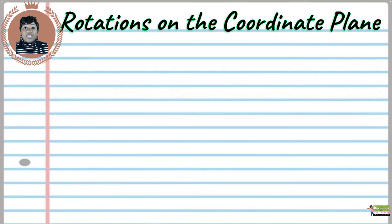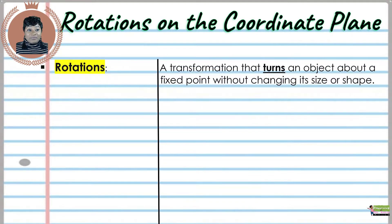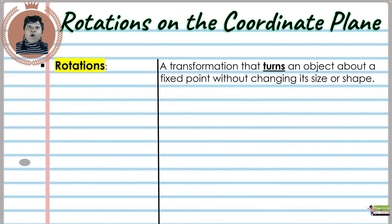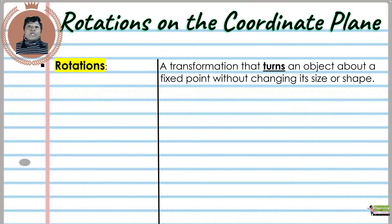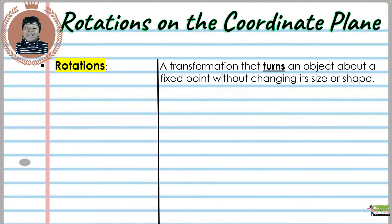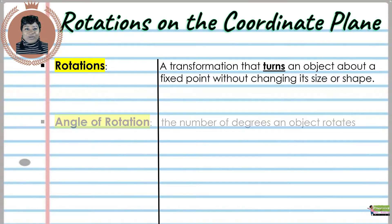Now we will begin with some notes. Rotations on the coordinate plane. First of all, what are rotations? Rotations are transformations that turn an object about a fixed point without changing its size or shape.